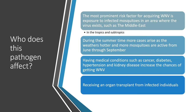Who does this pathogen affect? The most prominent risk factor for acquiring West Nile Virus is exposure to infected mosquitoes in an area where the virus exists, such as the Middle East, during the summer time, as the weather is hotter and more mosquitoes are active. Having medical conditions such as cancer, diabetes, hypertension, and kidney disease increase the chances of getting the virus, as does receiving an organ transplant from affected individuals.